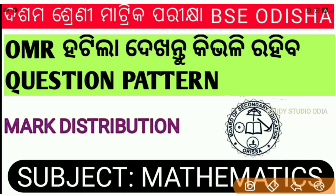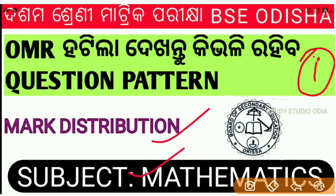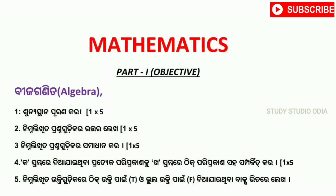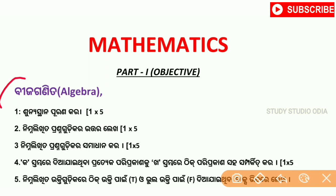When we go through our videos, we will look at the bottom of our list and move to the next subject. For mathematics, the objective part has questions in the OMR format for 50 marks, ranging from 20 to 25 marks.